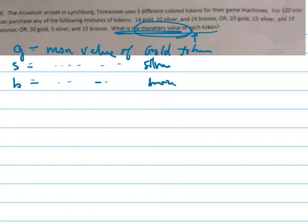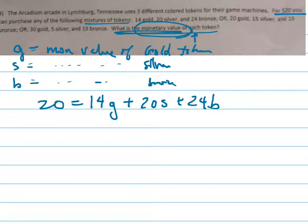Now I can write three equations with these three variables. Because it says for $20, you get any of the following mixtures of tokens. It's either 14 gold, so 14 times G, plus 20 times S, plus 24 times B is going to cost you $20.